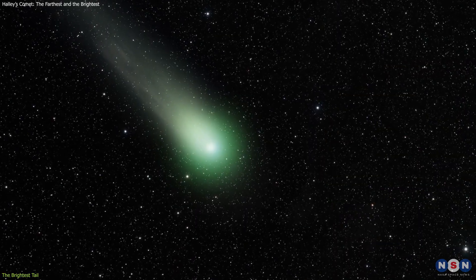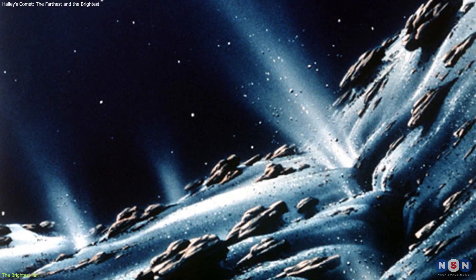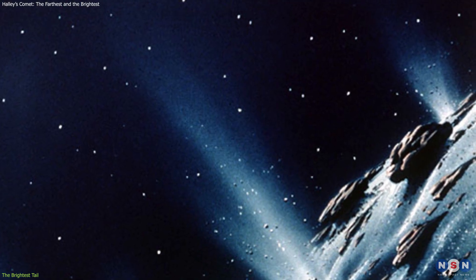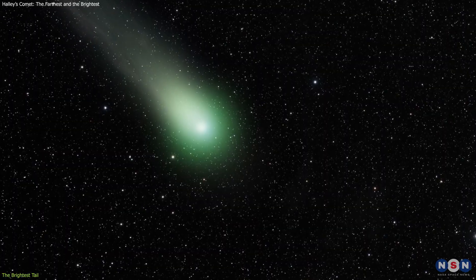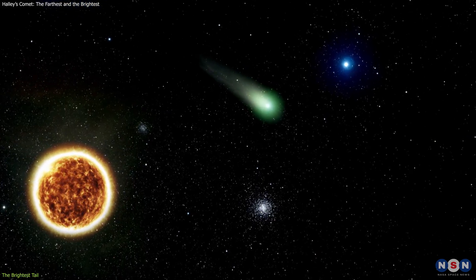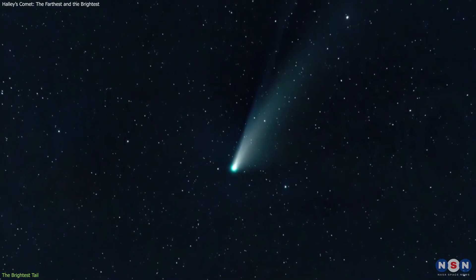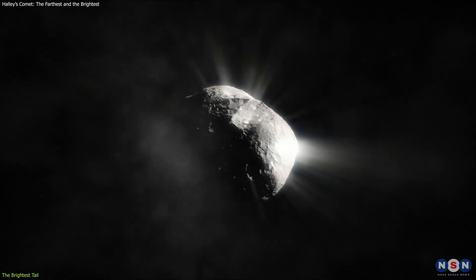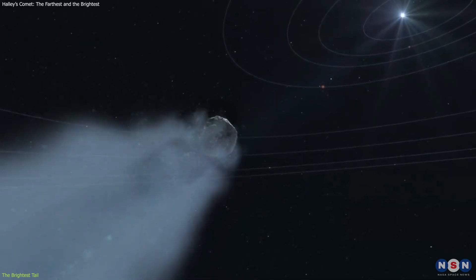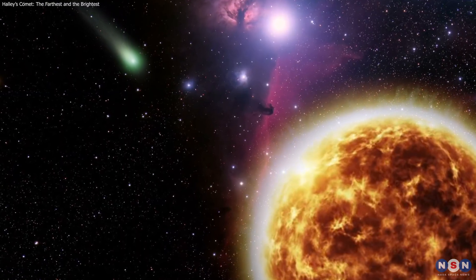But how does the comet form its tail? And what is it made of? Well, the answer is sublimation and outgassing. Sublimation is the process by which the ice in the nucleus of the comet turns directly into gas, without passing through the liquid phase. Outgassing is the process by which the gas in the coma of the comet escapes into space, carrying some dust with it. These processes happen when the comet gets closer to the Sun, and the solar radiation and heat increase. The gas and dust that are released from the comet form jets, which are like fountains or geysers that shoot out from the surface of the nucleus. These jets push the comet in the opposite direction, causing it to spin and wobble. The gas and dust that are ejected from the jets form the tail, which always points away from the Sun, regardless of the direction of the comet's motion.